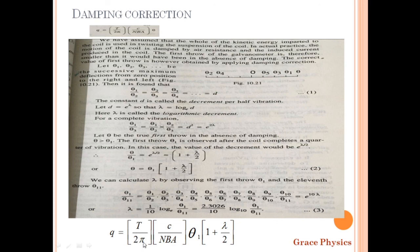We calculate the time period. C is one of the quantities, along with number of turns, area, and field B. We observe theta1 and theta11 on the scale. So we obtain the directly observable quantities, and we pass a small charge through the coil. This accounts for air resistance and induced current damping. In real conditions we use these expressions to correct the measured deflection.